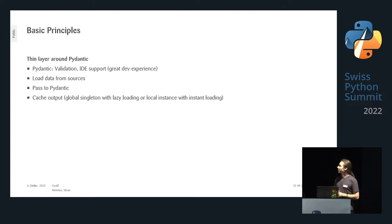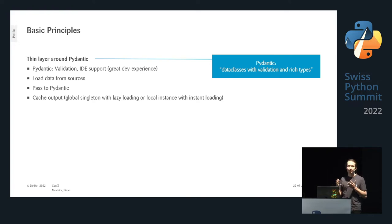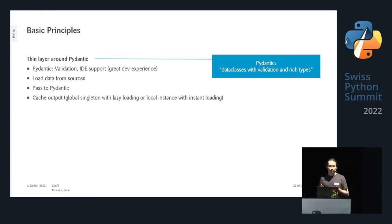Some of you might know pydantic — for those who don't, it's basically data classes but with validation and rich types. You can define a data class with more types than the standard Python types, and you get validation so you can't just put any data in these classes. Conf-set is just a layer around pydantic: it allows loading data from sources, then passes it to pydantic, which does all the validation and persisting.